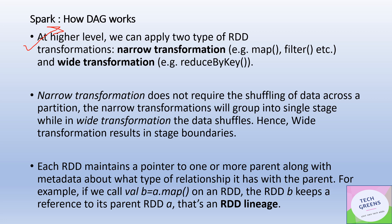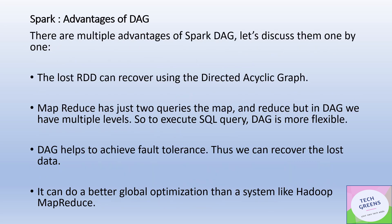To understand with an example: if you create RDD B from RDD A using the map operation, an RDD always maintains a pointer to one or more of its parents — that's how the RDD lineage is created.